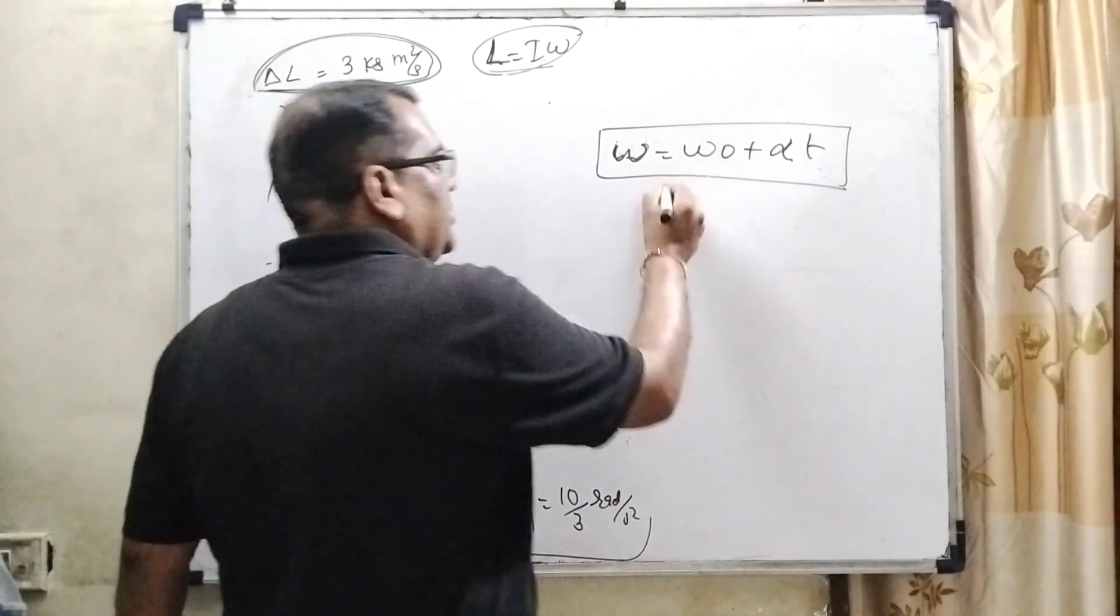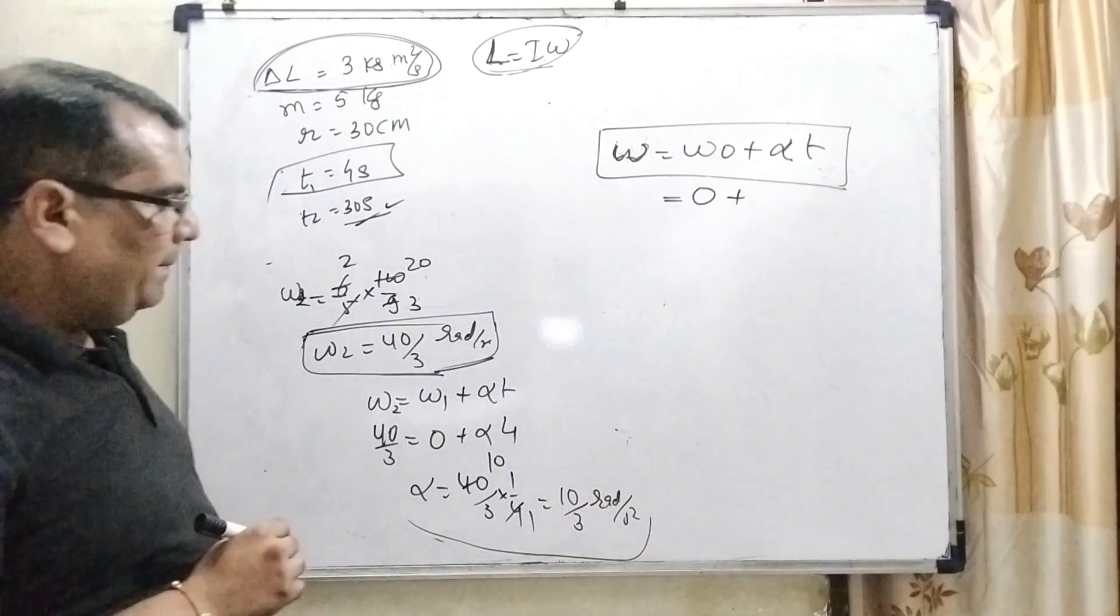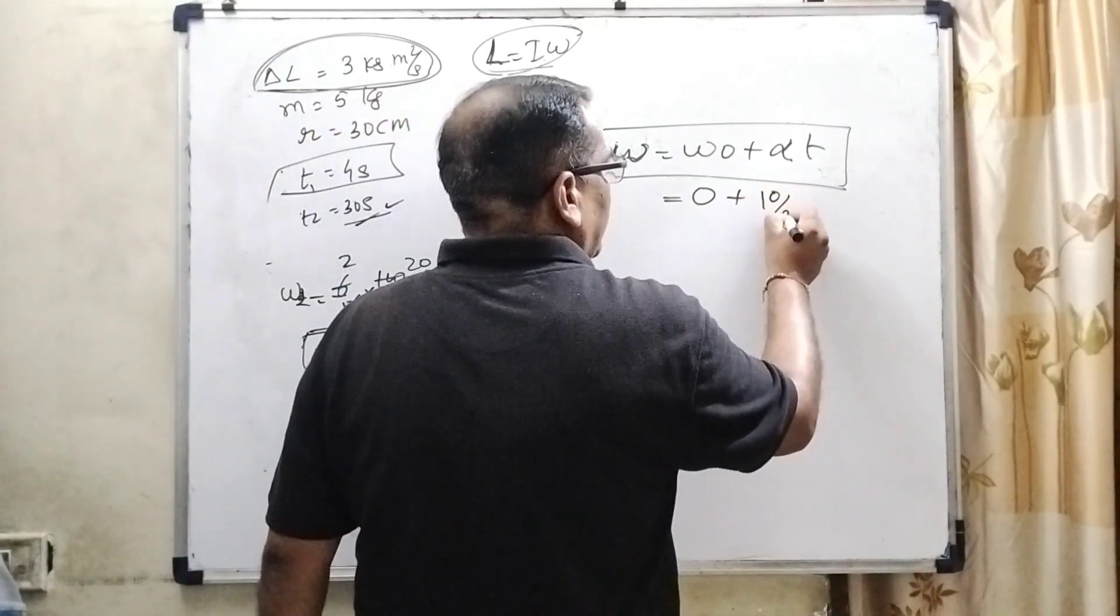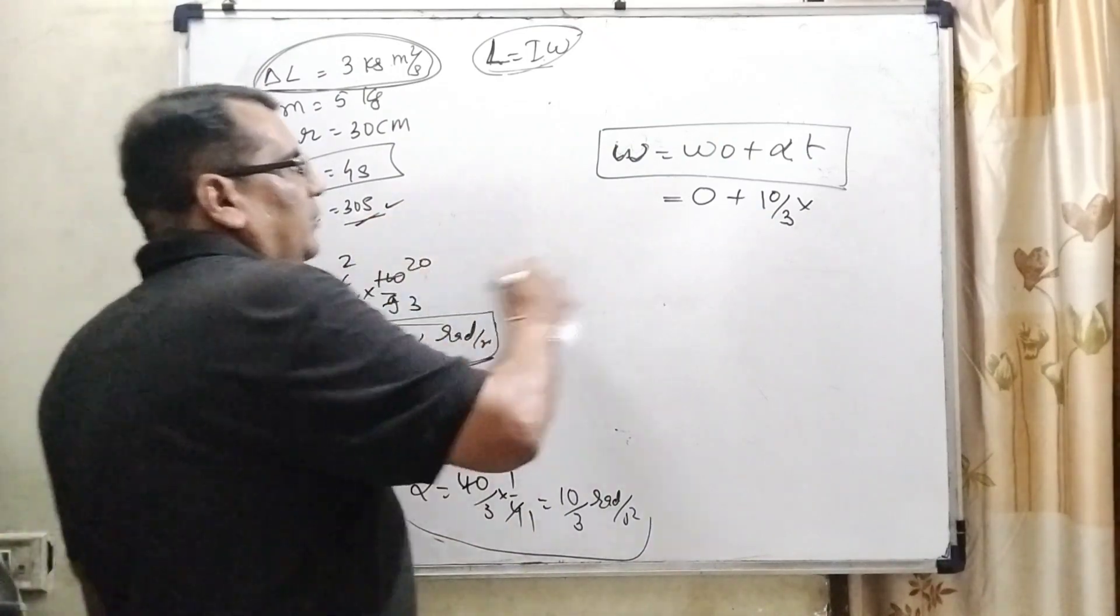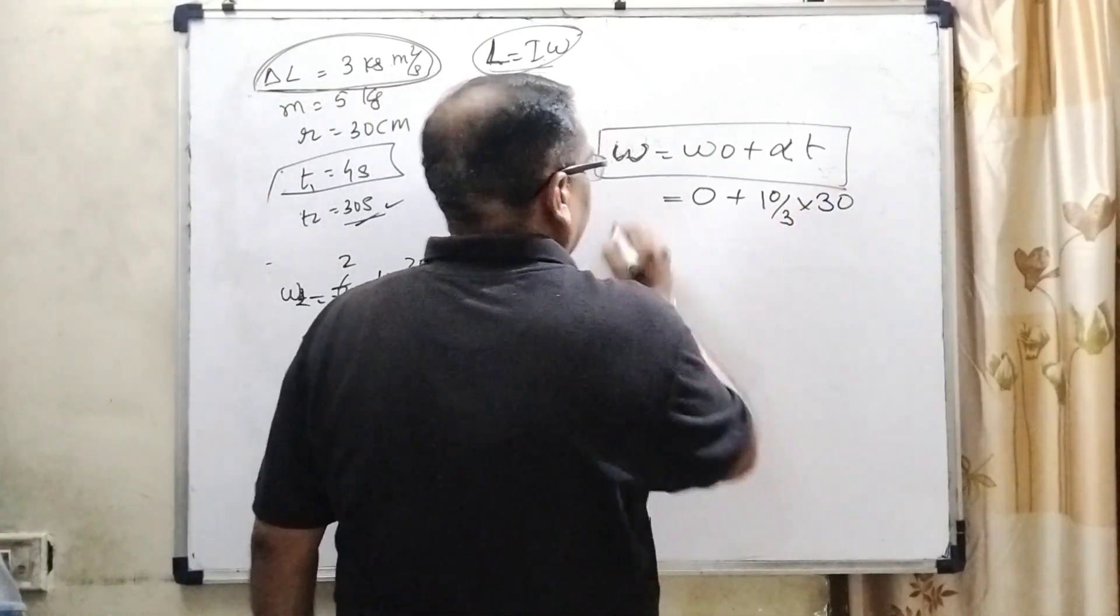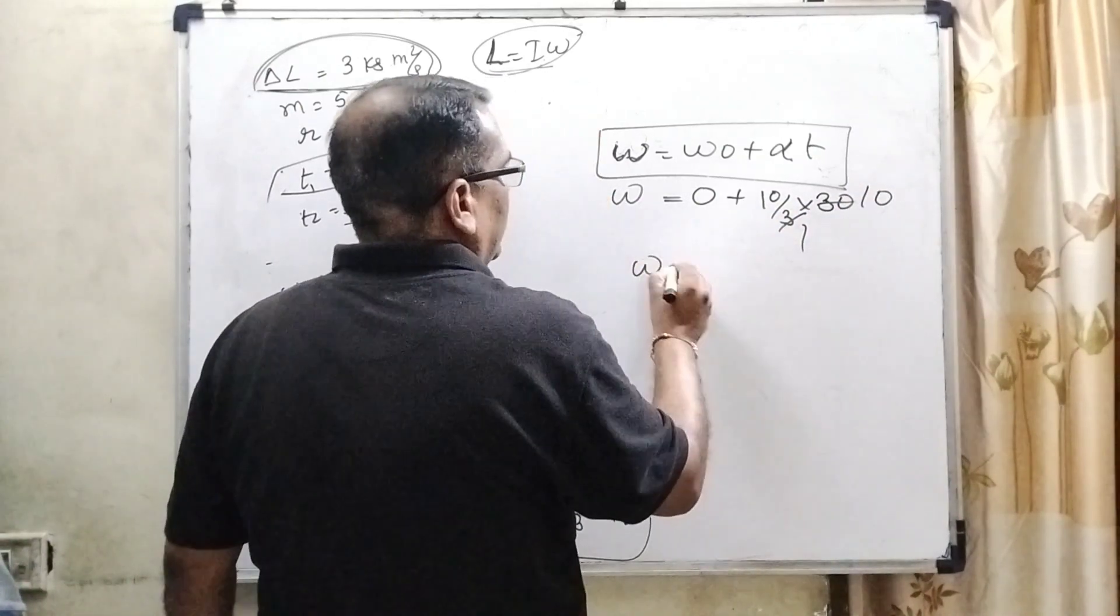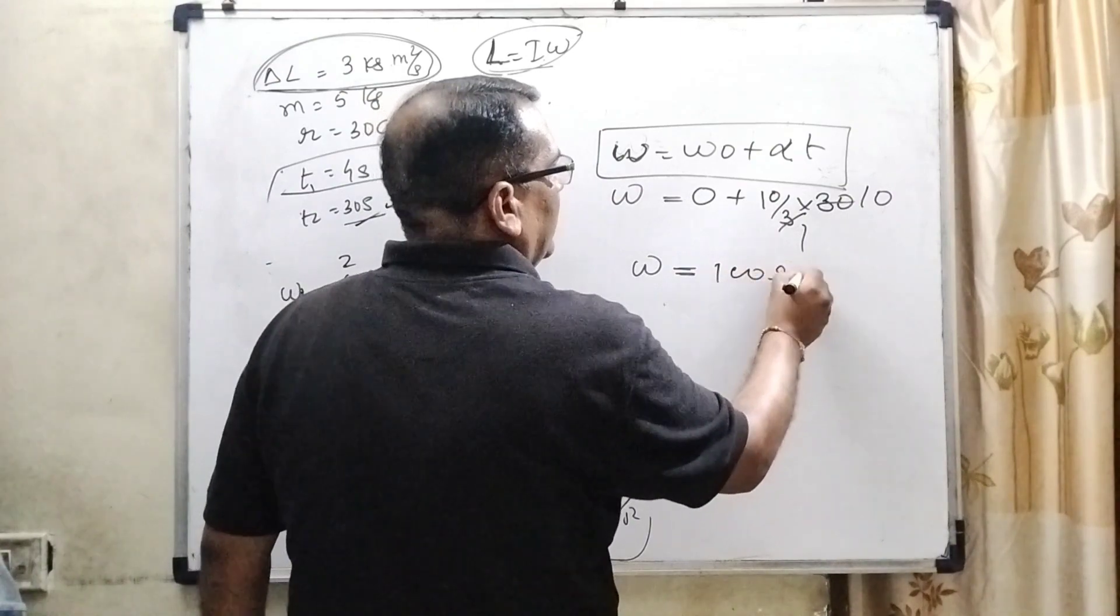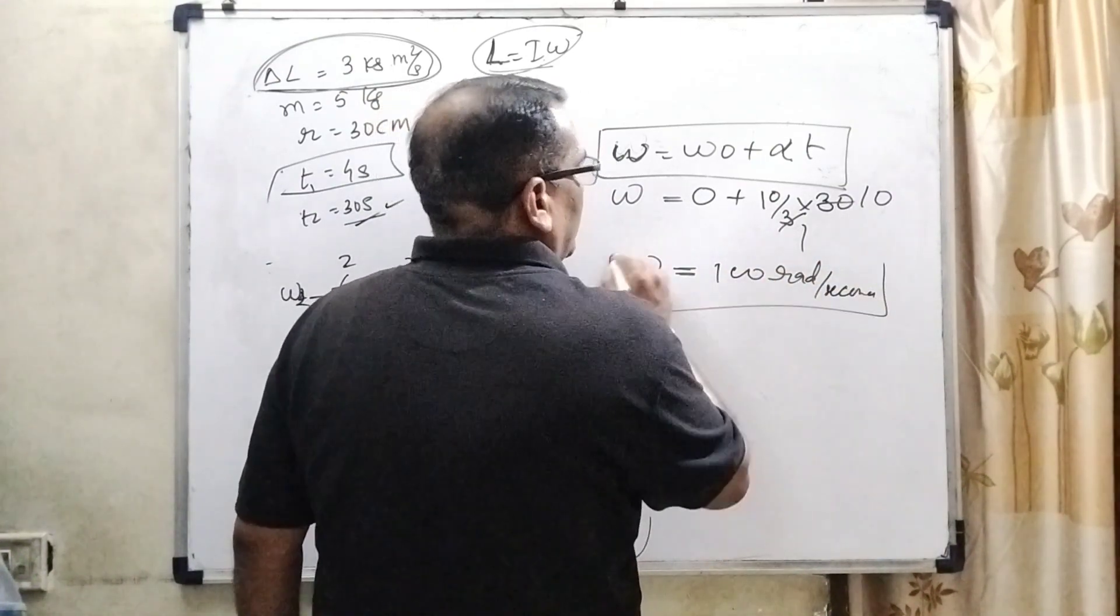And what is alpha? Alpha is 10/3 radians per second squared. And the time is given as 30 seconds. Put the value 30 here. So 3 cancels, and we get the angular velocity as 100 radians per second. I hope you understood this question.